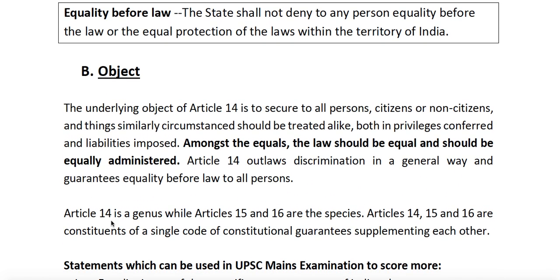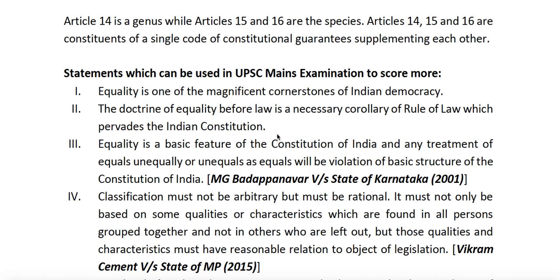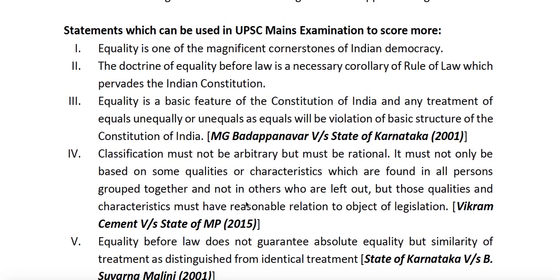Article 14 is a genus and Articles 15 and 16 are its species, because they are more specific with limited scope. We will discuss them in detail later. Here are a few statements which you could use as one-liners in your essays, law optional paper, or polity paper to fetch more marks.